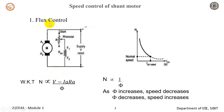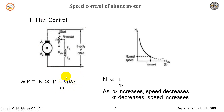The first method is the flux control method. We can control the speed by flux, by armature rheostatic control, and by applied voltage method, and also one more method — the potential divider method. So there are four methods basically to control the speed of a shunt motor.